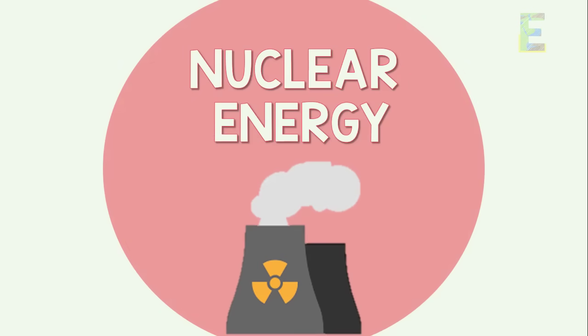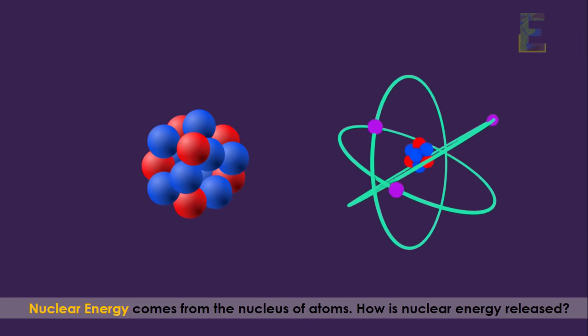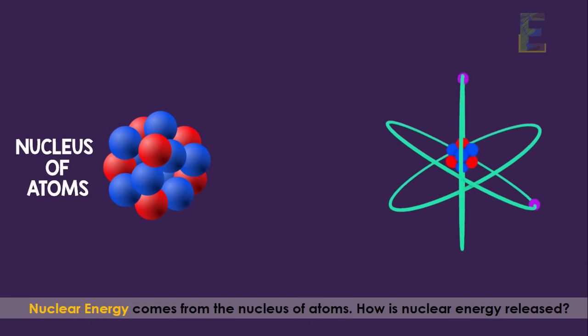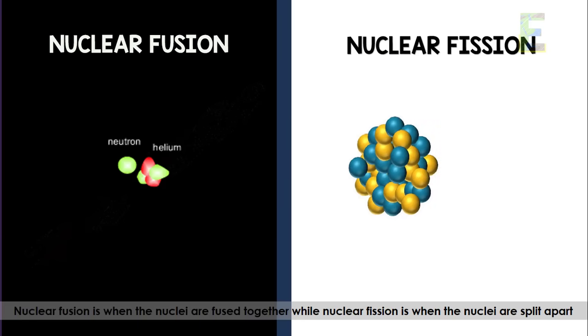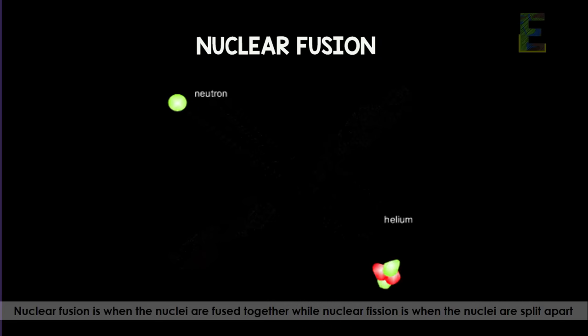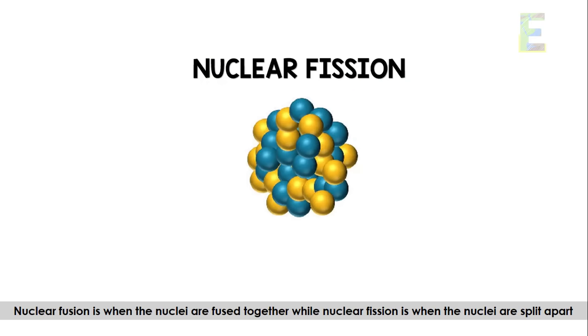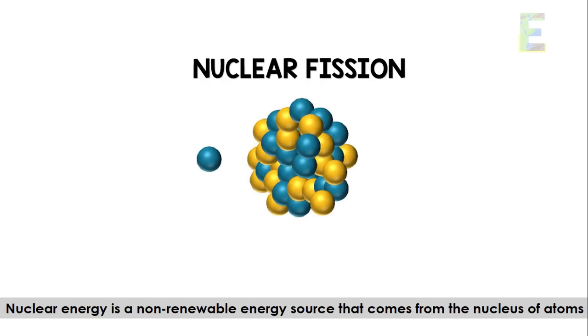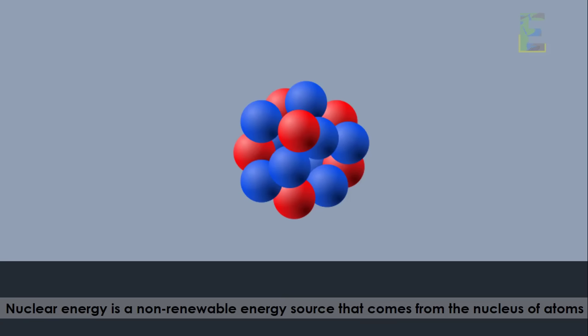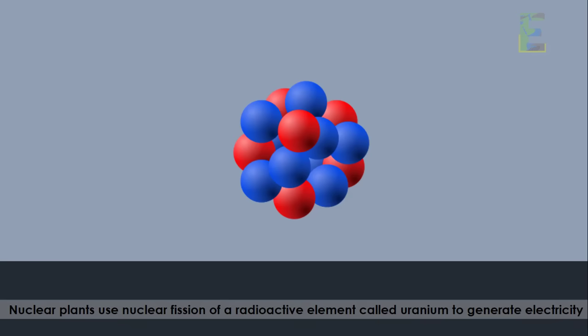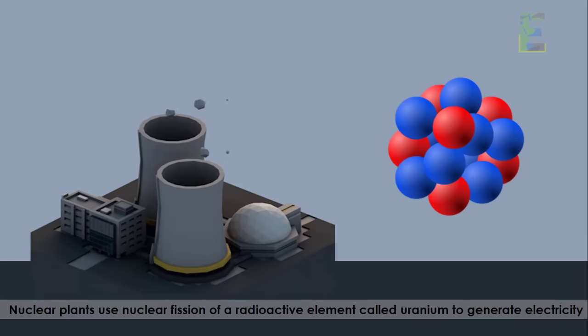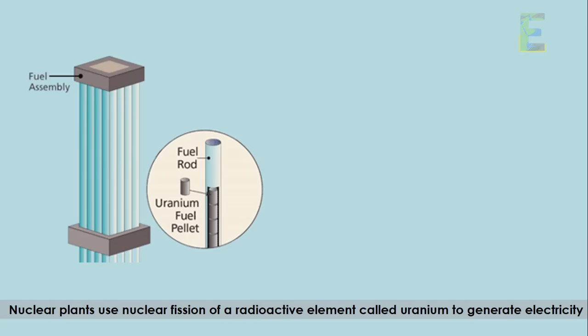The next type of energy is nuclear energy. Nuclear energy comes from the nucleus of atoms. It is released by nuclear fusion or nuclear fission. Nuclear fusion is when nuclei are fused together, while nuclear fission is when nuclei are split apart. Nuclear energy is a non-renewable energy source, and nuclear plants use nuclear fission of a radioactive element called uranium to generate electricity.